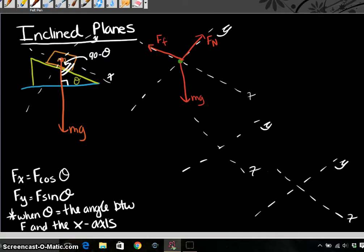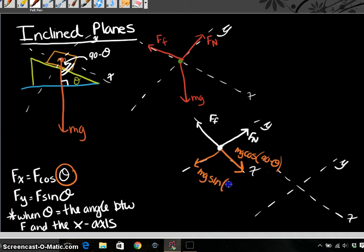That means that if I want to resolve mg, I can think about the x component as f cosine of the angle between the x-axis and mg, which in this case is not the angle that's given. So I can think of the x component of mg as being mg times the cosine of 90 minus theta. And I can think about my y component as being mg times the sine of 90 minus theta.